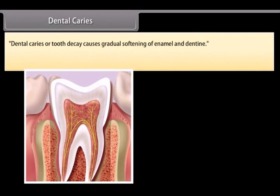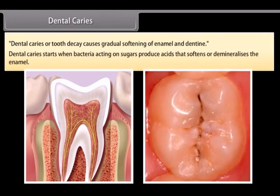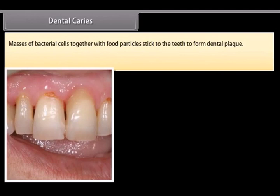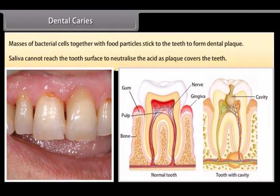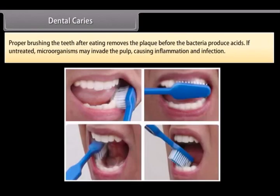Dental caries, or tooth decay, causes gradual softening of enamel and dentine. It starts when bacteria acting on sugars produce acids that soften and demineralize the enamel. Masses of bacterial cells together with food particles stick to the teeth to form dental plaque. Saliva cannot reach the tooth surface to neutralize the acid as plaque covers the teeth. Proper brushing after eating removes the plaque before bacteria produce acids. If untreated, microorganisms may invade the pulp causing inflammation and infection.